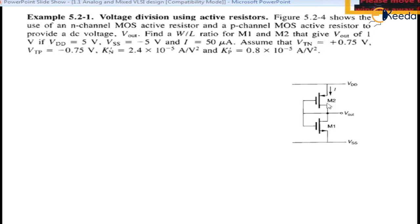They both are used to provide a DC voltage drop V_out. We need to find W/L ratio for M1 and M2 that gives a voltage drop V_out of 1 volt. So V_out is 1 volt. Okay.